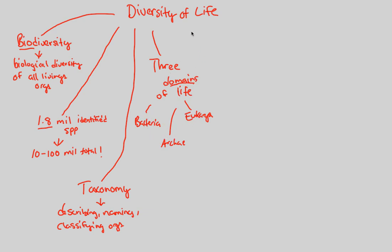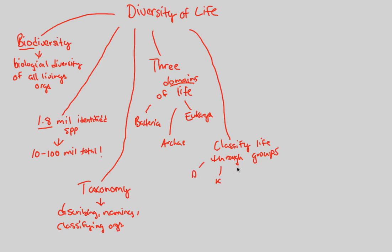We also like to further classify things, and we do further classify life into groups. You can think of those groups as the classical hierarchy: domain, kingdom, phylum, class, order, genus, and species. That is classification. That is taxonomy in a nutshell.